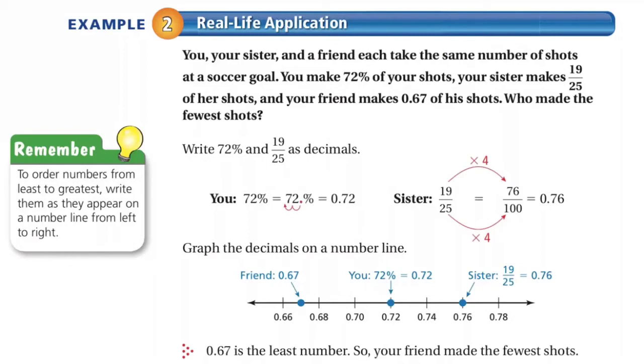Once we do that, we have three decimal numbers: 0.67, 0.72, and 0.76. Once we have them all written as decimals, it's pretty easy to see that your friend made the fewest shots.